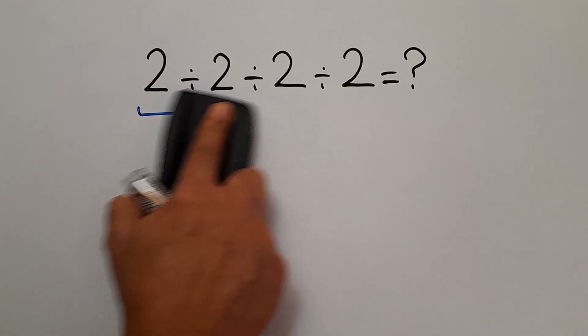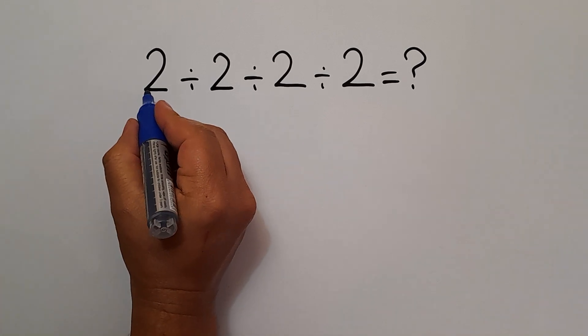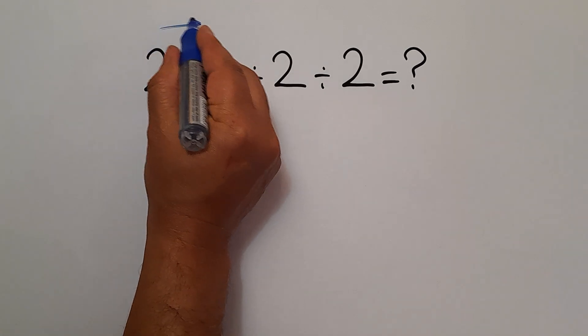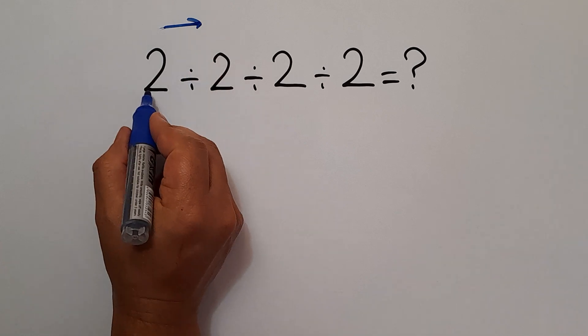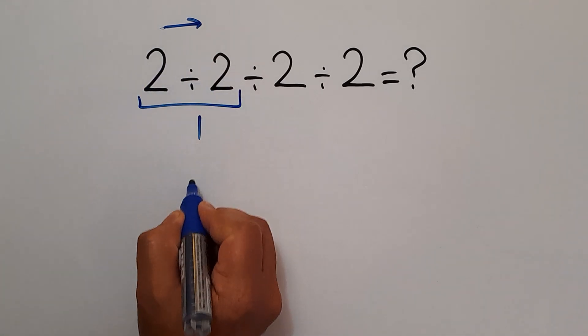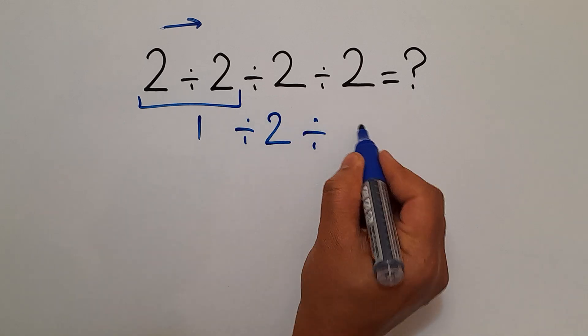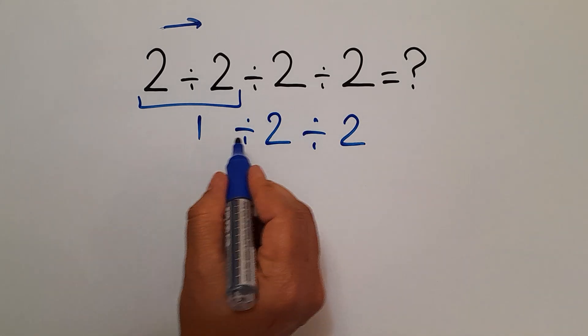Because according to the order of operations, we have to work from left to right. So here first we do 2 divided by 2 which equals 1, then divided by 2 and again divided by 2. 1 divided by 2